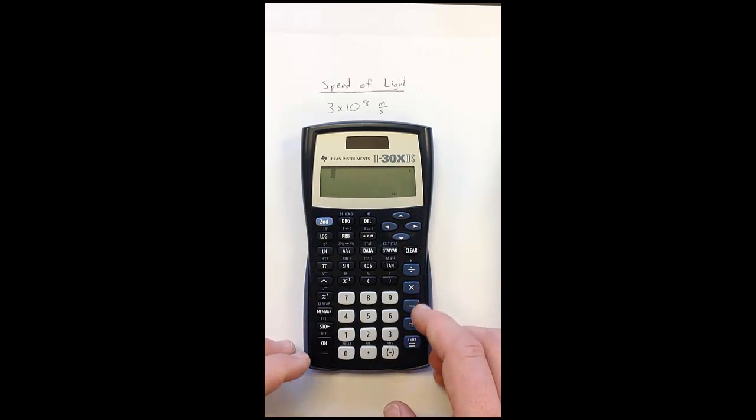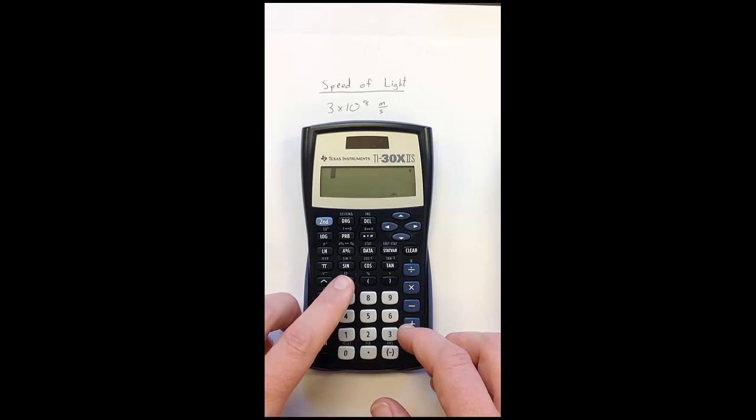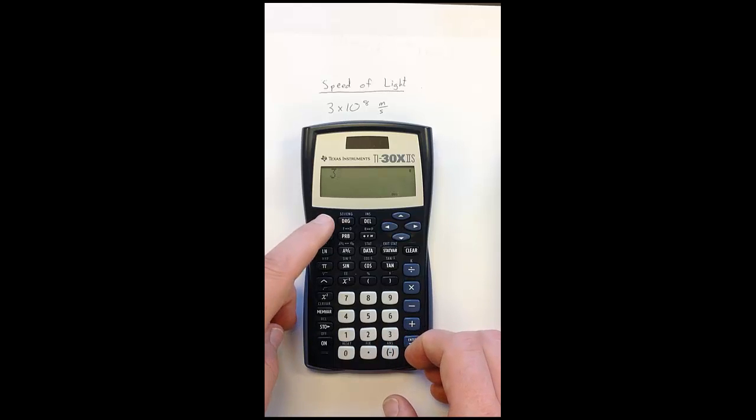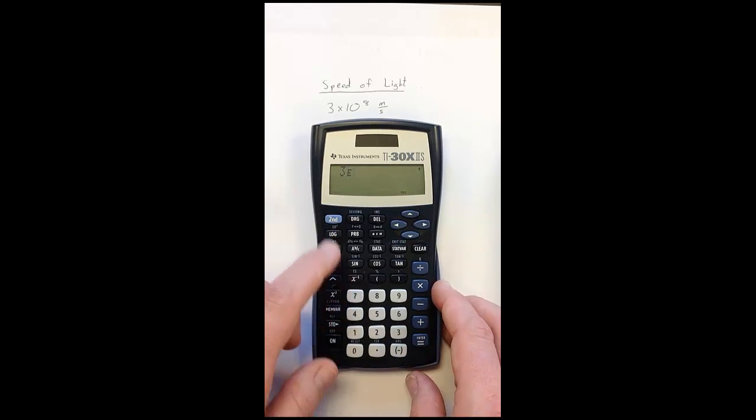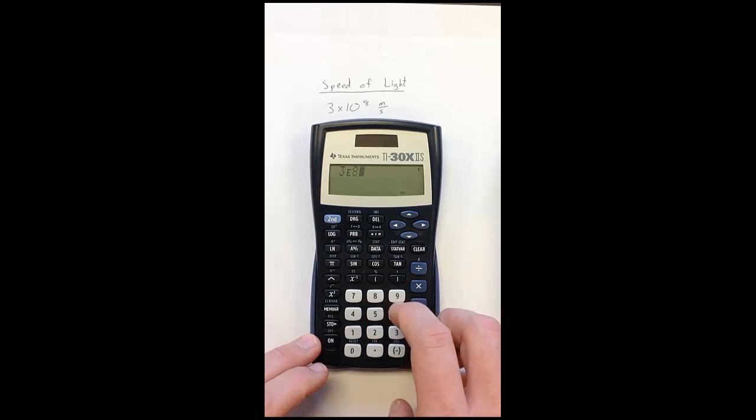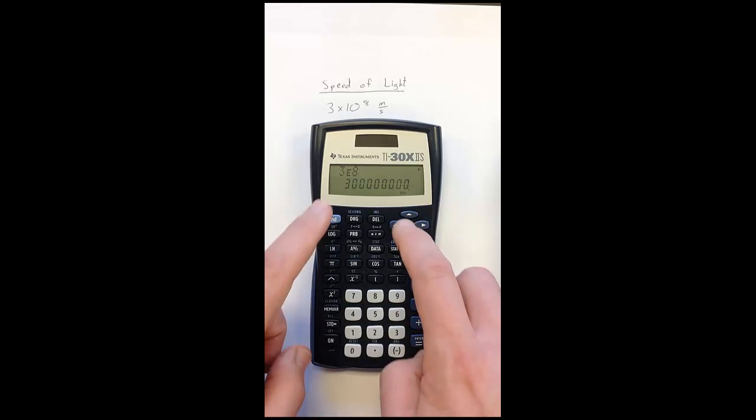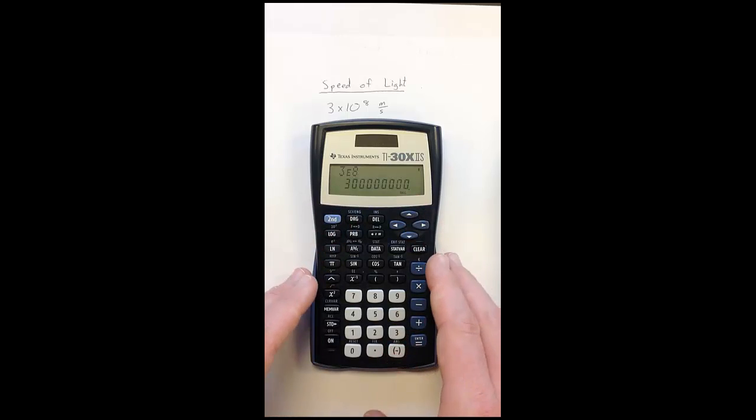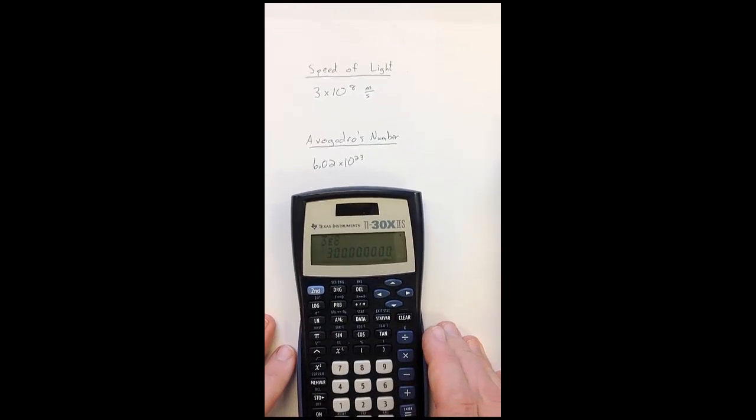Another way that we can input that number and save ourselves a couple keystrokes is with the secondary function, the exponent function. So we start with the base number 3, and then we're going to do second and the EE function. Notice we just get a capital E on the screen—sometimes you'll see this on Excel when it's trying to represent numbers in scientific notation. That E takes the place of times 10 and then the caret symbol that we used before. So now all we need to do is put in the 8, evaluate, and we see that we still get the 300 million.